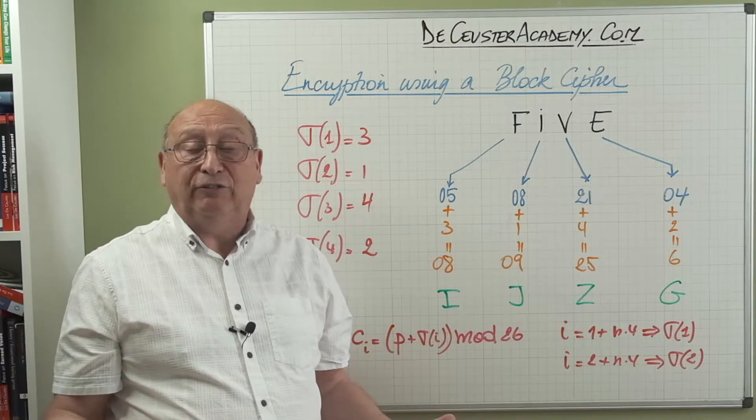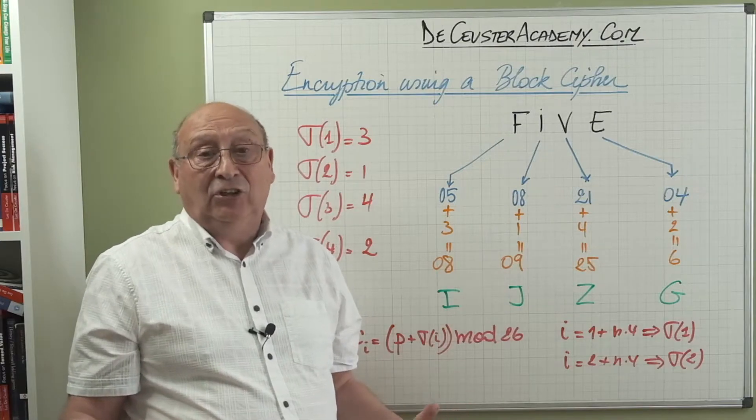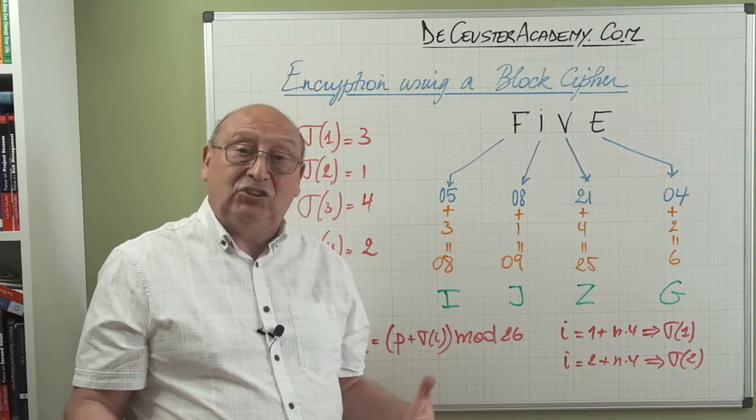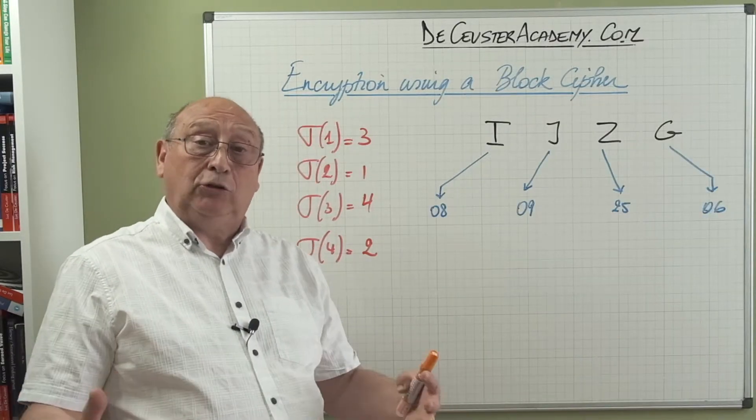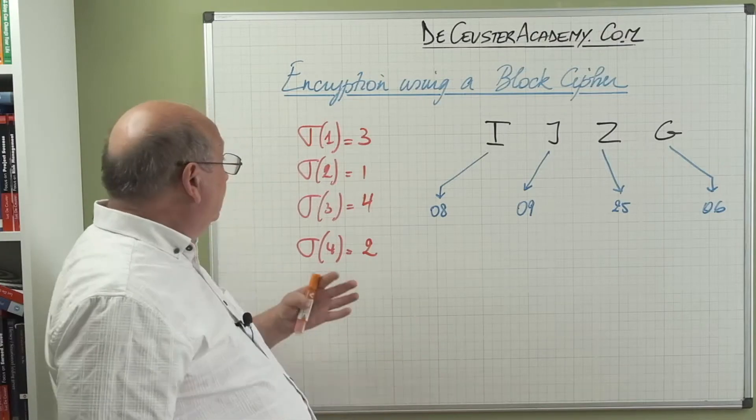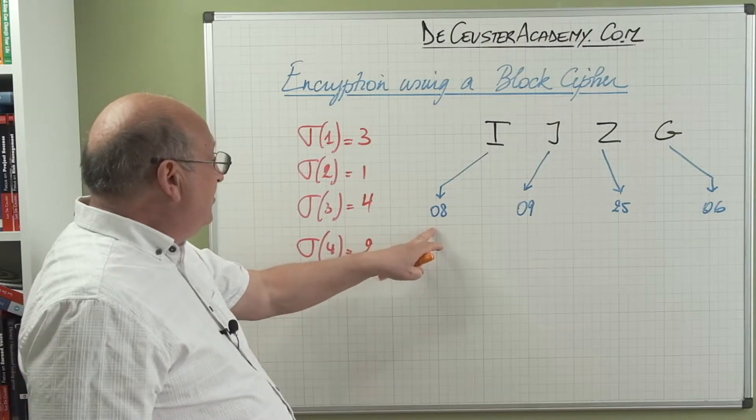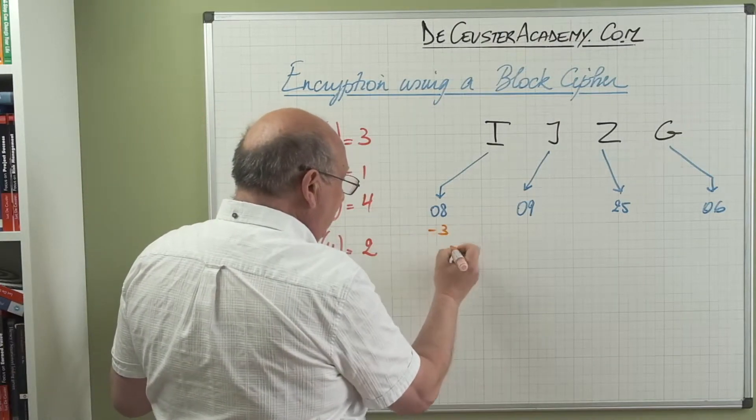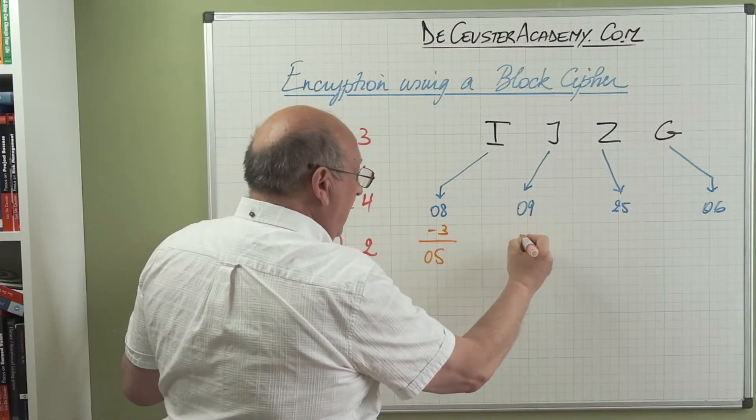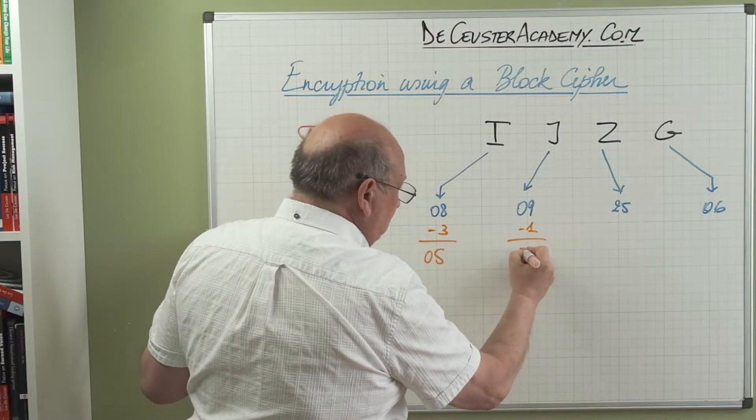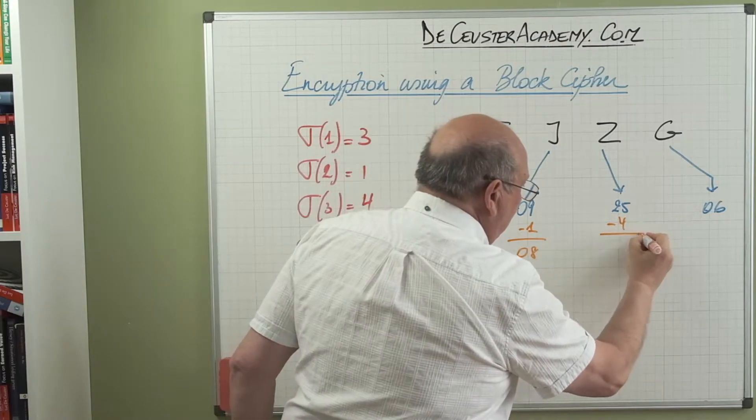Let's see how we can decrypt the message and find the original message. This is the encrypted message that we found before. Of course, to decrypt it, we have to use the same values of the block cipher that we had before. So basically eight, now we say minus three, which is equal to zero five. Zero nine minus one, which is zero eight. We have 25 minus four is 21, and then we have six minus two is zero four.